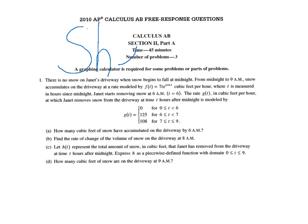Start just by reading it. There is no snow on Janet's driveway when snow begins to fall at midnight. From midnight to 9 a.m., snow accumulates on the driveway at a rate modeled by the function f(t) equals 7te to the cosine of t cubic feet per hour, where t is measured in hours since midnight.